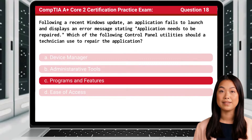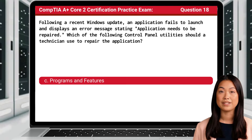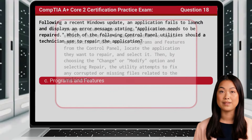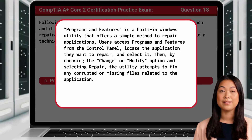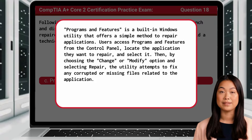The answer is C: Programs and Features. Programs and Features is a built-in Windows utility that offers a simple method to repair applications. Users access Programs and Features from the Control Panel, locate the application they want to repair, and select it. Then, by choosing the Change or Modify option and selecting Repair, the utility attempts to fix any corrupted or missing files related to the application.